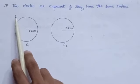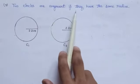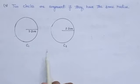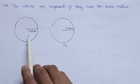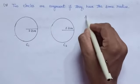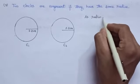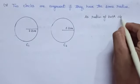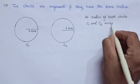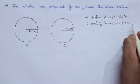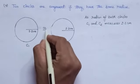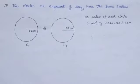In the same way, we can define the congruency of two circles. Two circles are congruent if they have the same radius. Here you can see that there are two circles C1 and C2. Both circles C1 and C2 have the same radius of length 2.2 cm. Hence, the radius of both circles C1 and C2 measures 2.2 cm, that is the same length. Hence, these two circles C1 and C2 are congruent to each other. Two circles are congruent if they have the same radius.